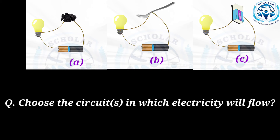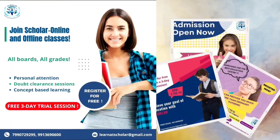Now test your knowledge. Look at the three circuits — you have to choose the circuit or circuits in which electricity will flow. You will find the answers in the next video explaining chemical properties of metals and non-metals and their uses. If you wish to join Scholar, book a free three-day trial session. Subscribe to the channel and press the bell icon for more videos like this. Stay tuned, bye-bye!